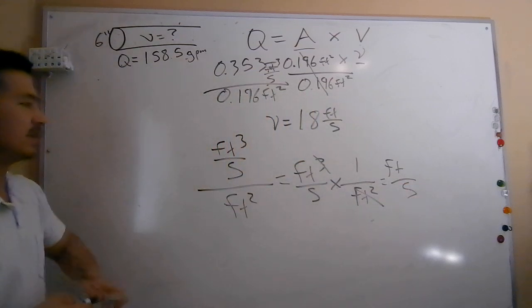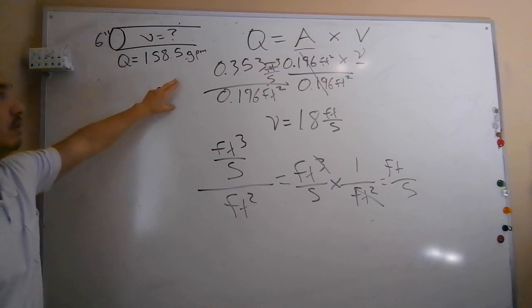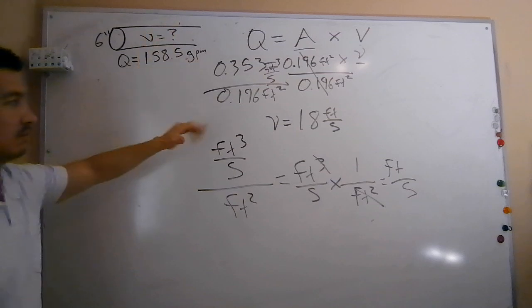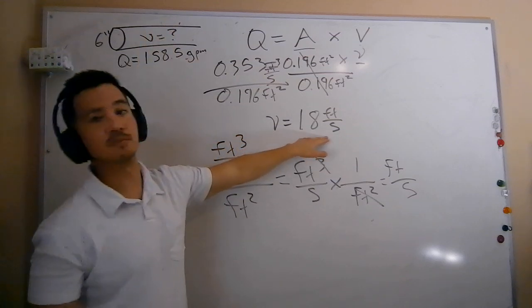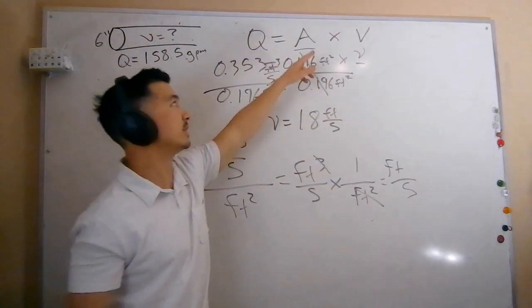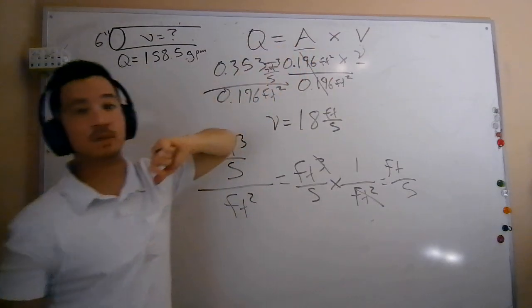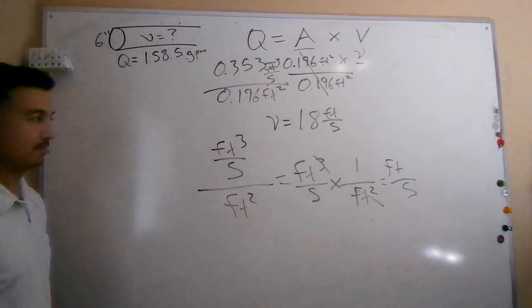Now you don't need to know the derivation of these units, but just understand when you're using the QAV formula, this is how you get from with a flow and an area to get to velocity. And the velocity you're going to get to is always going to be in terms of feet per second because your area is going to be in square feet and your flow is going to be in cubic feet per second.